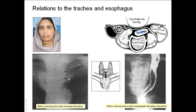The tracheal cartilages can be seen in this PA X-ray because they are slightly calcified, and they are pushed off the midline. This is a retrosternal goiter causing deviation of the barium-filled esophagus to the side, as shown in this barium swallow study.